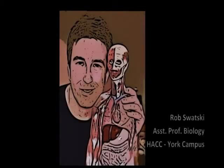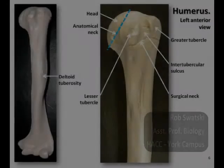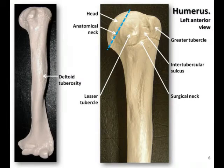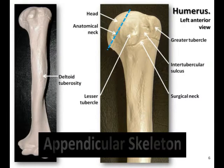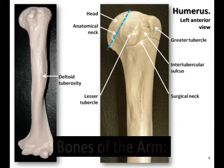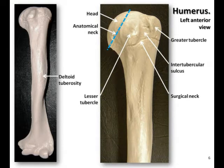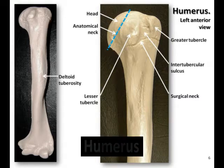Hello, this is Rob Swatsky from the York campus of Harrisburg Area Community College in York, Pennsylvania. In this podcast, I'll be continuing my review of the bones of the appendicular skeleton, focusing on the bones of the arm, specifically the location and surface landmarks of the humerus.